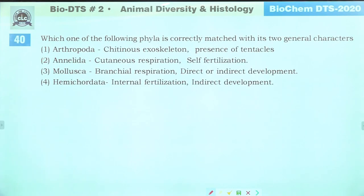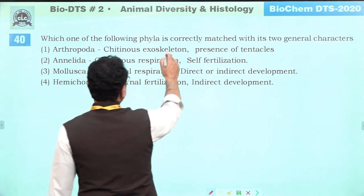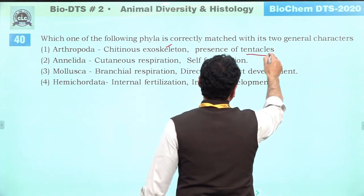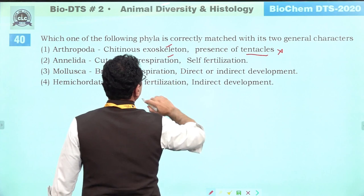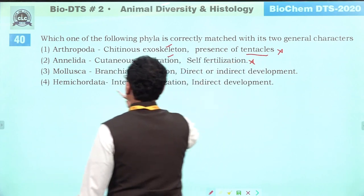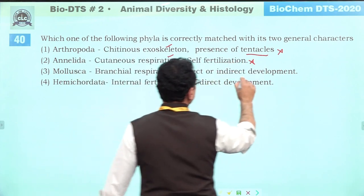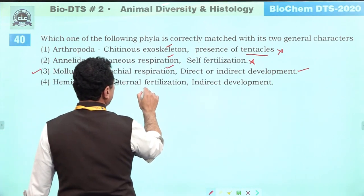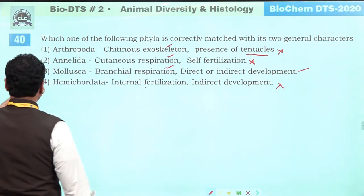Which phylum is correctly matched with its two general characters? Arthropods: chitinous exoskeleton — correct; but presence of tentacles — not in arthropods, so incorrect. Nematoda: cutaneous respiration — correct; cross-fertilization — incorrect. Mollusca: branchial respiration — correct; direct or indirect development — correct. Hemichordata: external fertilization — so incorrect. Correct answer is three — Mollusca.